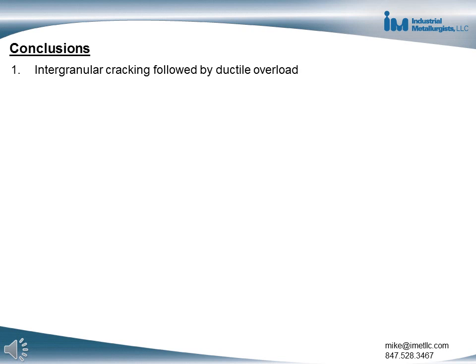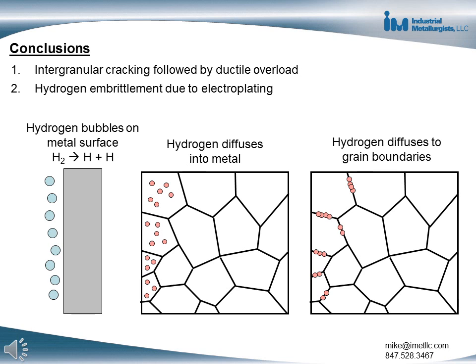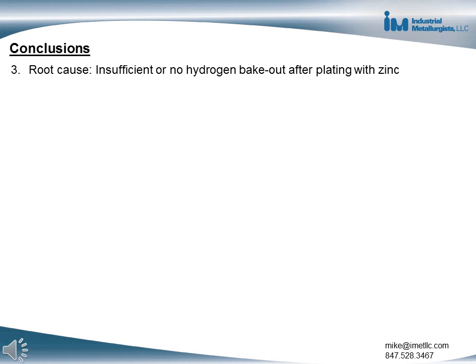Based on the data presented, the conclusions are that the screw failed due to intergranular cracking followed by ductile overload. The intergranular cracking was enabled by hydrogen embrittlement that occurred when the steel screw was electroplated with zinc. During electroplating, hydrogen bubbles form at the metal surface. The hydrogen can diffuse into the metal and onto the grain boundaries, weakening them.